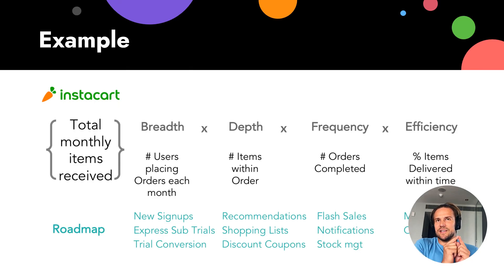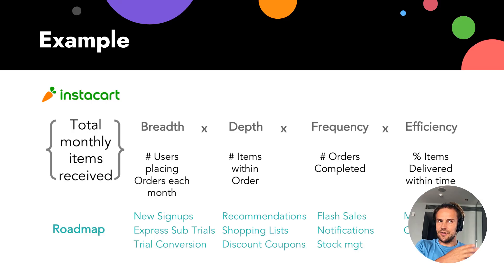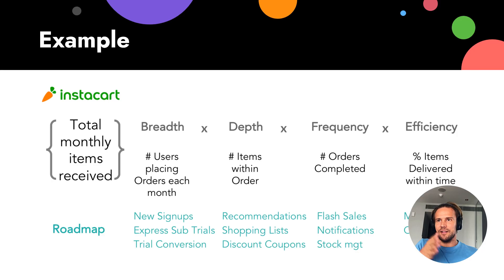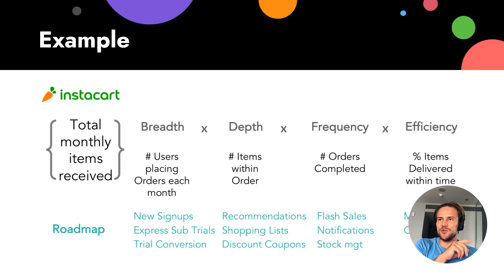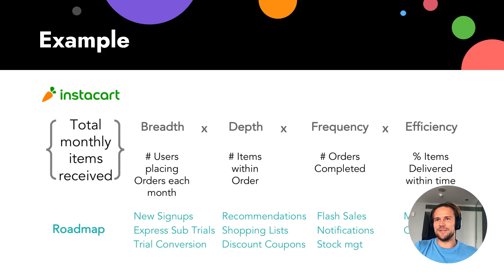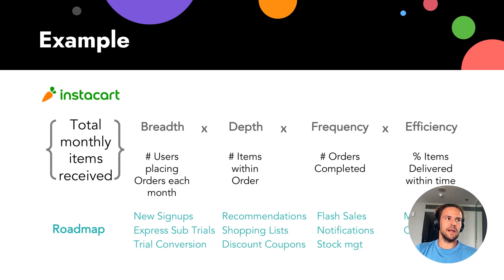The idea is that this is how you do decomposition for the Northstar metric. As you can see, every dimension increases independently. If you'd like to double your metric, imagine 1.2 multiplied by 1.2 multiplied by 1.2 multiplied by 1.2 — just 20% improvement in each dimension more than doubles your Northstar metric and the value for the customer.